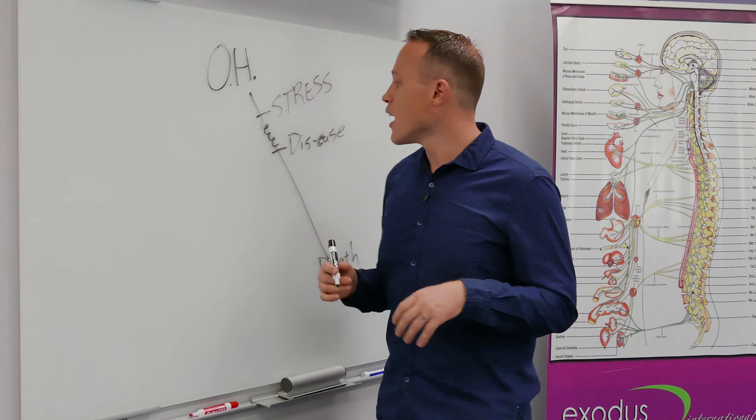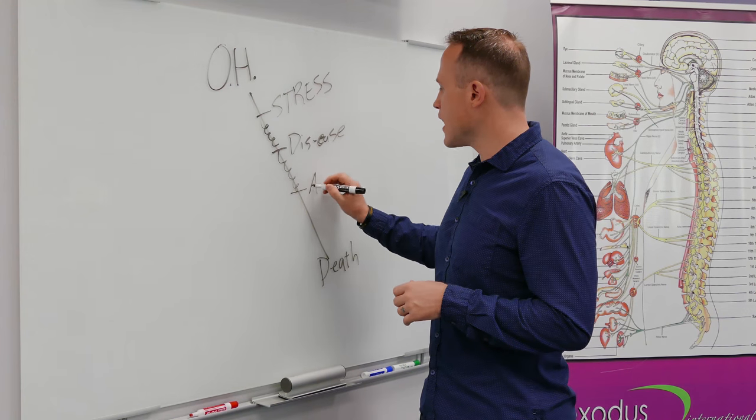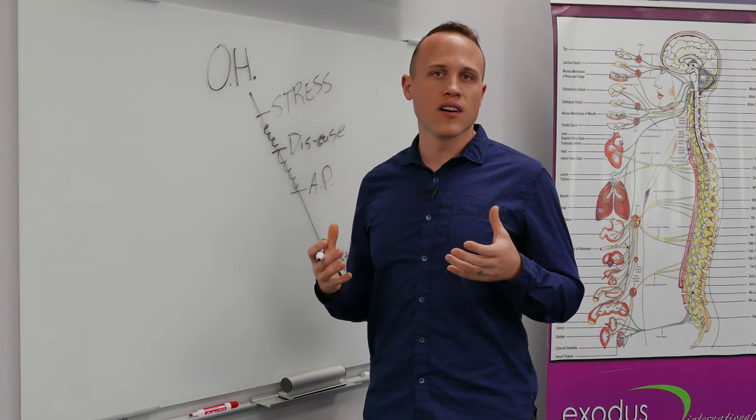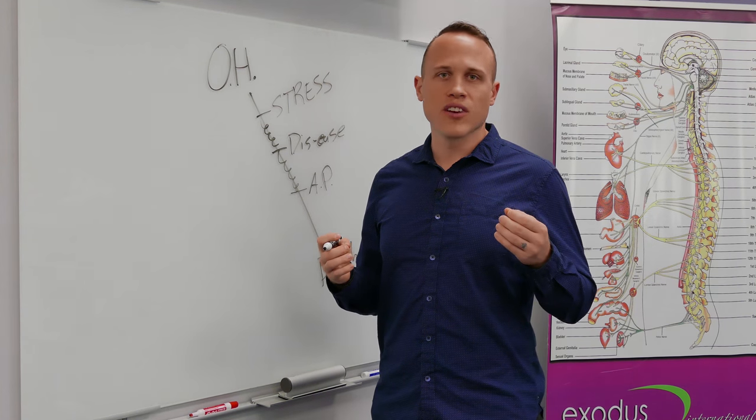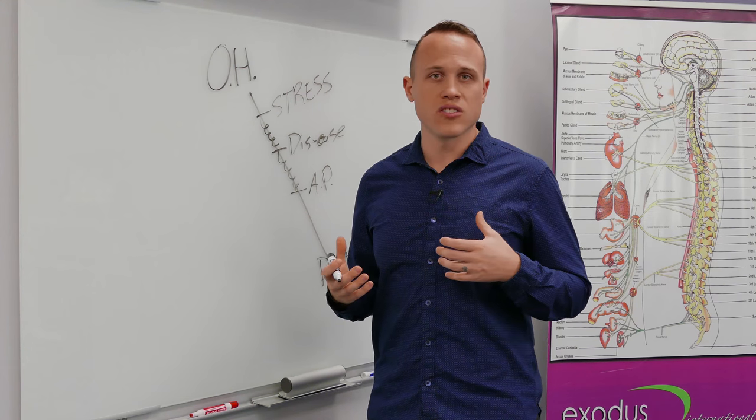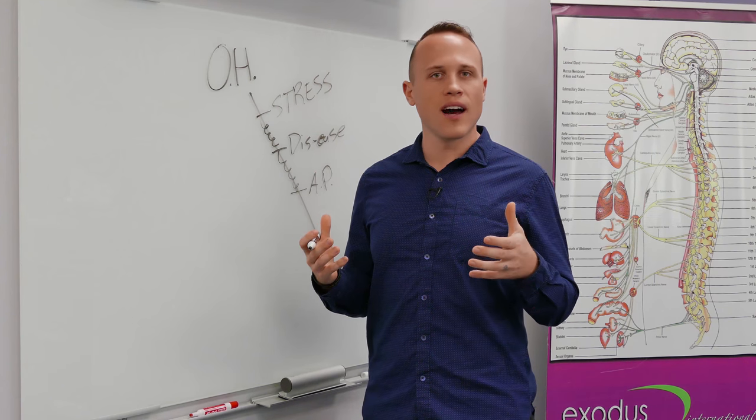Then if we don't catch it, we continue to go down to asymptomatic pathology - that's a fancy word for symptoms we don't feel. These are things that are starting to form, like high blood pressure, kidney stones, or cancer. We don't feel those things when they're starting to form in our body.